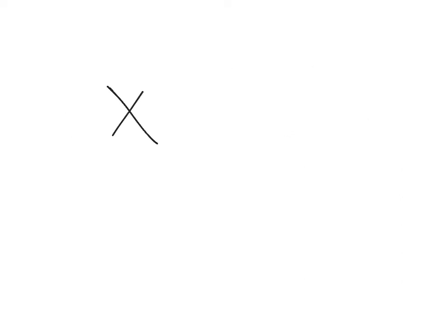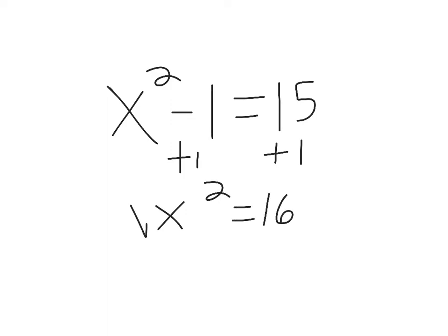More complicated. So let's say that x squared minus 1 equals 15. So I'm going to add 1 to each side. So I have x squared equals 16. Then I will square root. So I have x equals plus or minus 4.